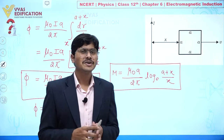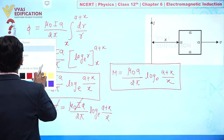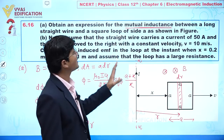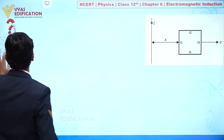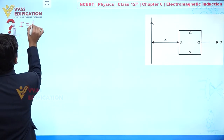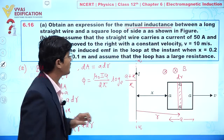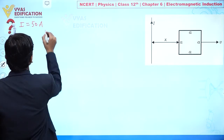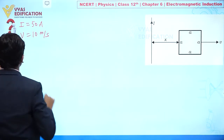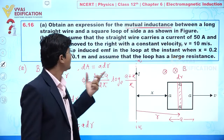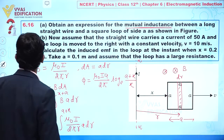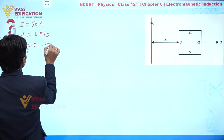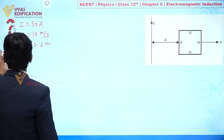Now for part B: the straight wire carries a current I = 50 ampere. The loop is moving to the right at a constant velocity of 10 m/s. We have to calculate the induced EMF at the instant when x = 0.2 meter.